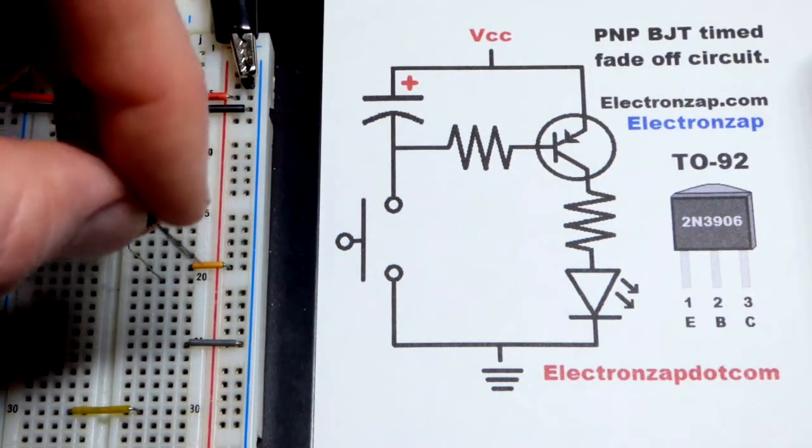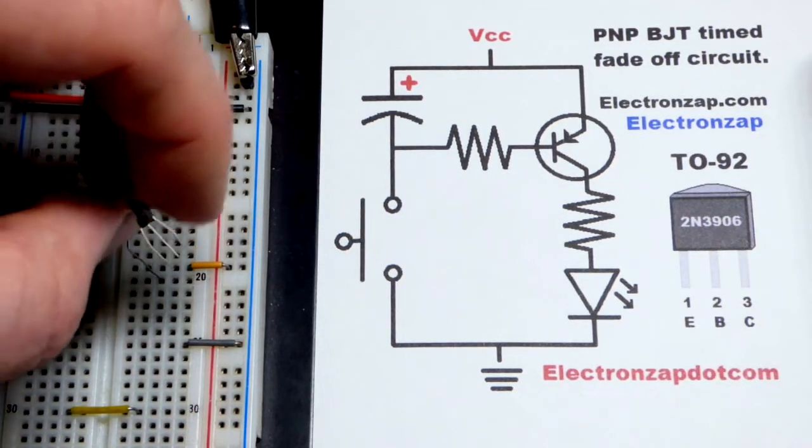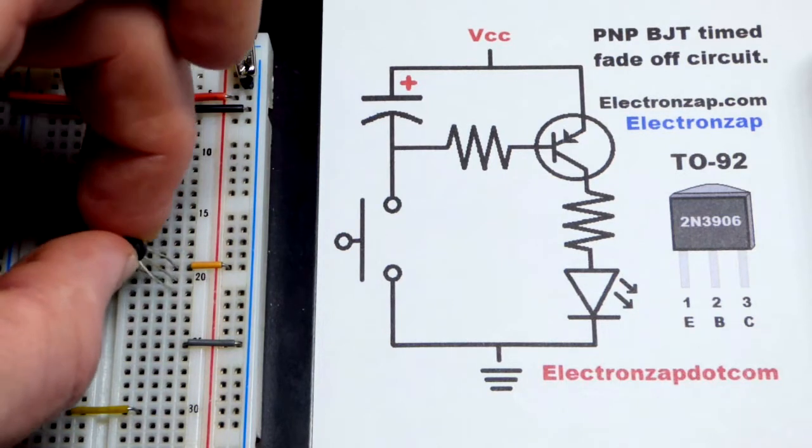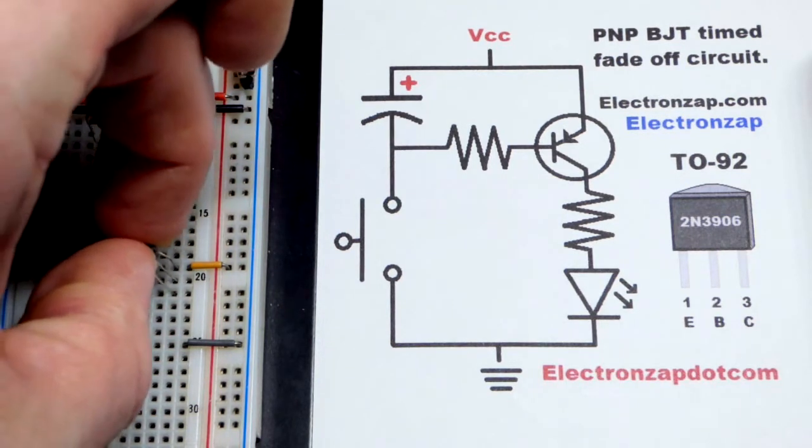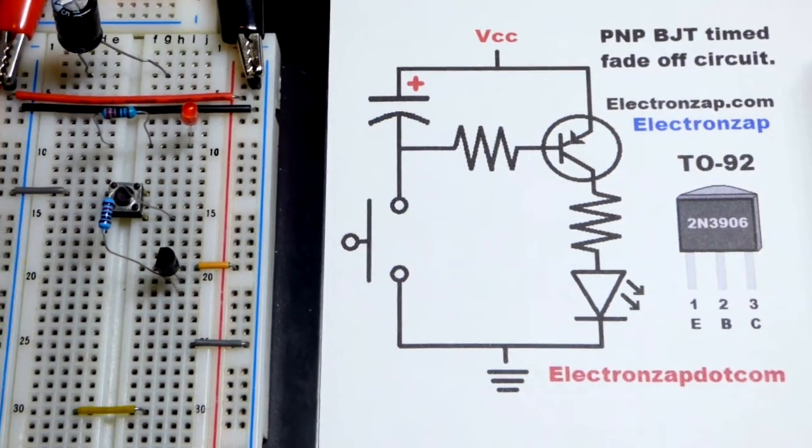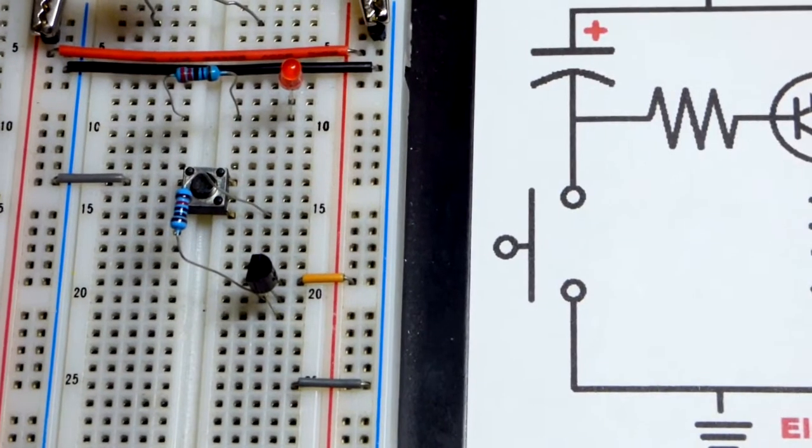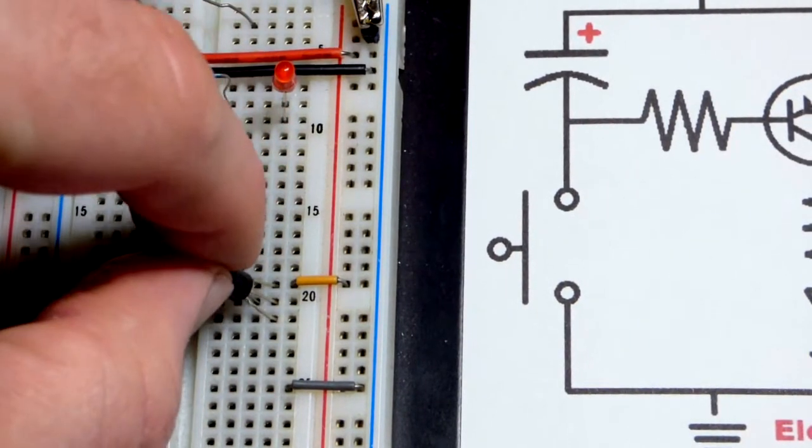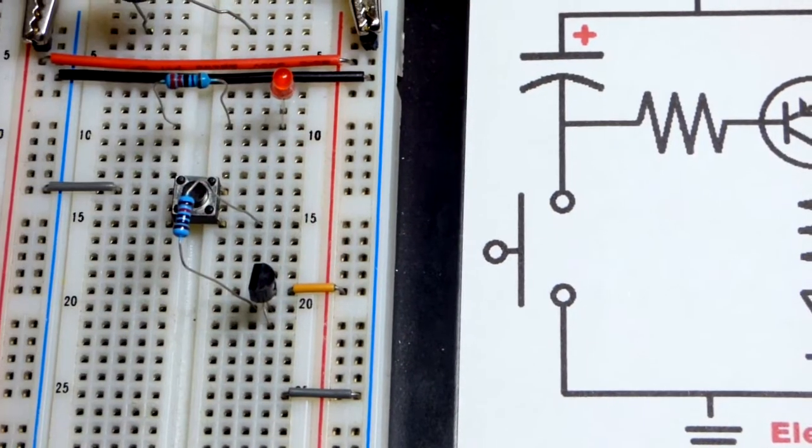Now the left pin is the emitter. I'll turn it this way. Now the top pin is the emitter. Put the emitter to the orange jumper and the base to the resistor right there. Zoom in a little bit to get a better look.